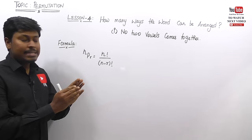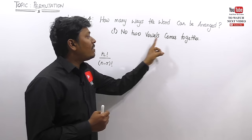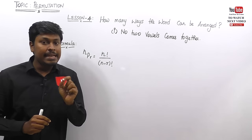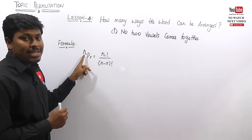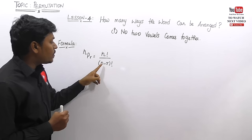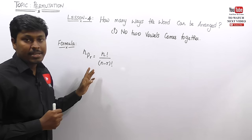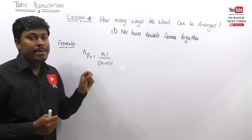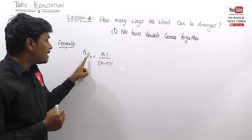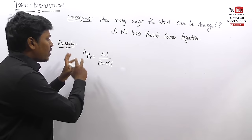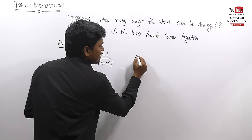Lesson number 4 covers the same logic — how many ways a word can be arranged — but with the condition that no two vowels come together. From lesson 4, we need to learn one simple formula: nPr, which equals n factorial divided by (n minus r) factorial. This is the basic formula for permutation. Let me show how to apply this formula in some cases.